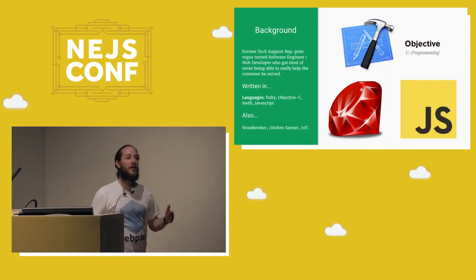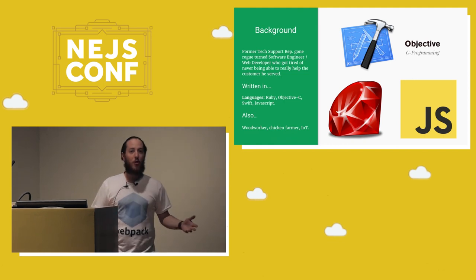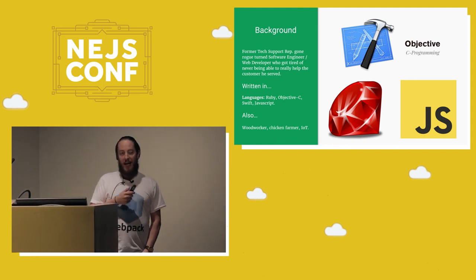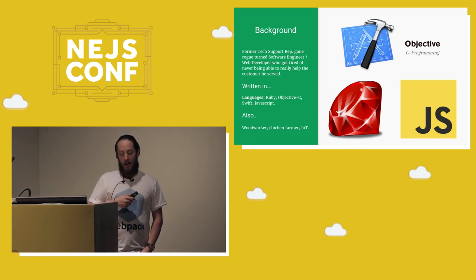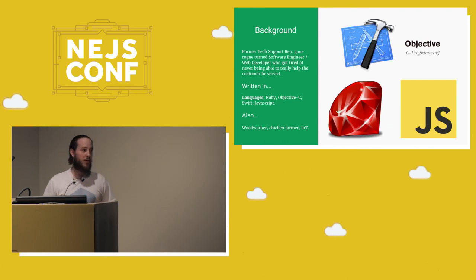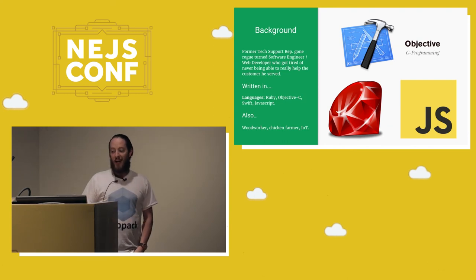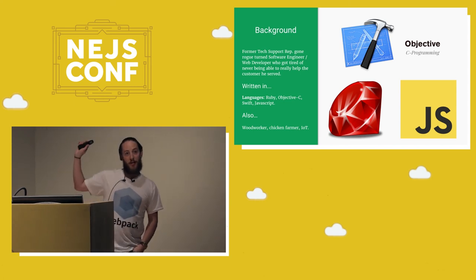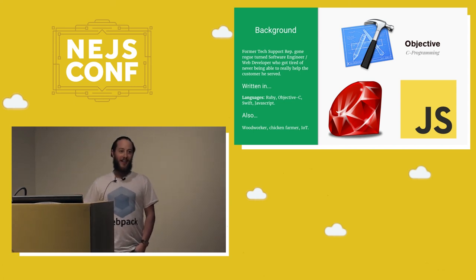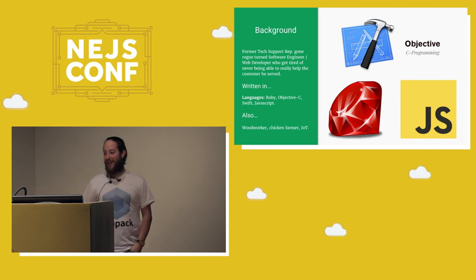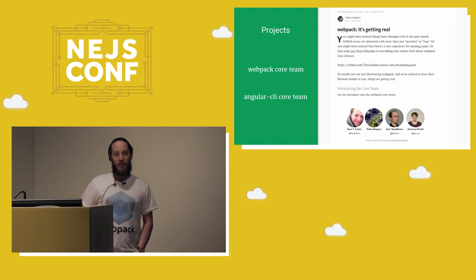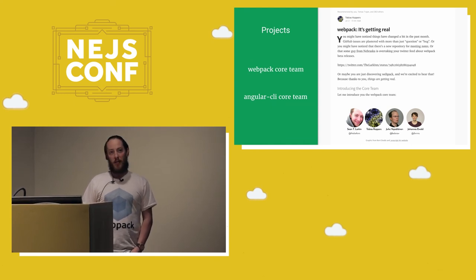A little bit about myself: I'm a former tech support, kind of gone rogue. I learned how to program and got tired of not being able to fix people's issues myself. I've had the opportunity to write in Ruby, Objective-C, Swift, and JavaScript. I'm also a woodworker and I love chicken farming. Them eggs are good.